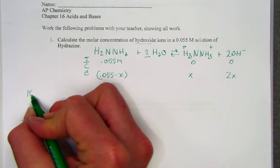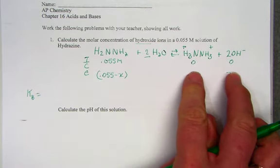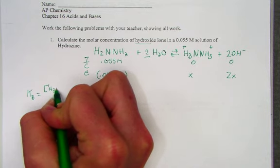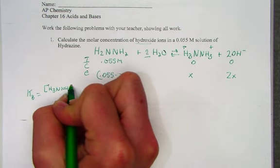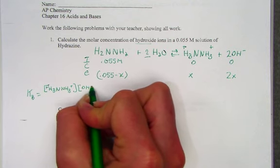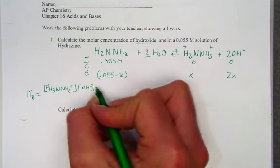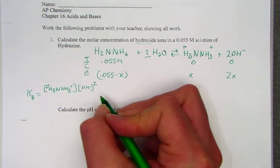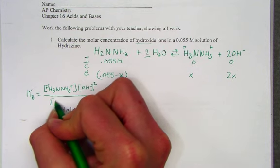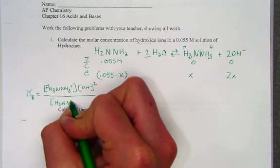KB is an expression that shows products over reactants. The product is H3NNH3, both carrying a positive charge, times the hydroxide ion, knowing that the coefficient becomes the power with respect to that, it must be squared, set over the original concentration of H2NNH2.